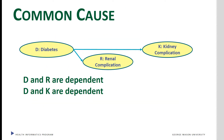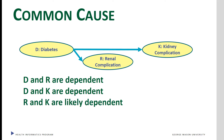The three variables may also be related to each other in a common cause fashion. Here, diabetes is the cause of both renal complications and kidney complications — diabetes is the common cause with two different effects. Diabetes is correlated with both renal and kidney complications. Kidney and renal complications are likely to be independent, as there is no causal relationship among them.